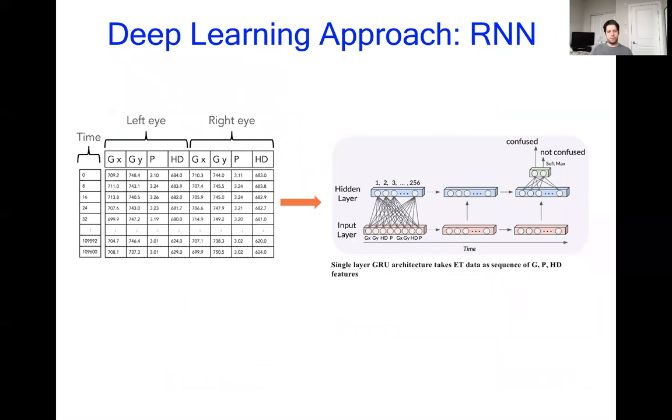What we did first was to use these raw sequences directly as input to a recurrent neural network, in particular the gated recurrent unit variant of the recurrent neural network, which is a neural network specifically for processing sequential data like eye tracking data. A couple problems with this were the length of the data items and the small size of the dataset, typically not a good thing for a deep learning method.